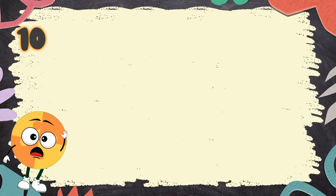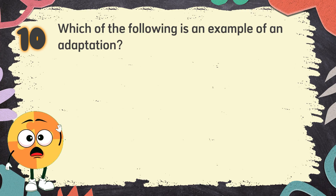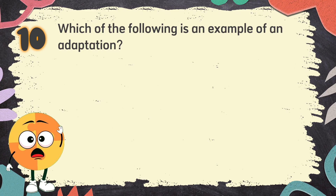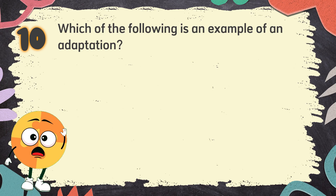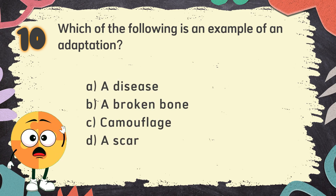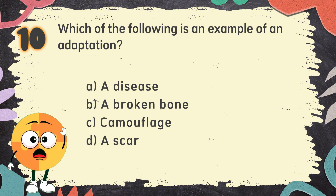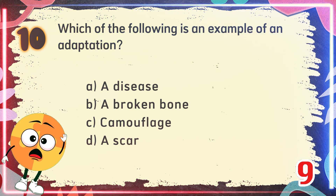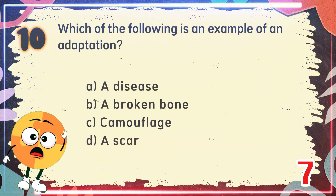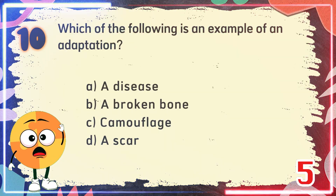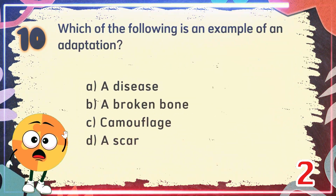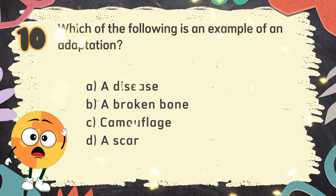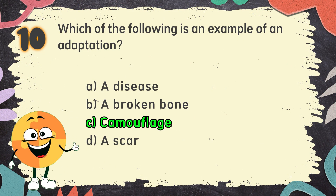Number 10. Which of the following is an example of an adaptation? The choices are A. A disease, B. A broken bone, C. Camouflage, D. A scar. The correct answer is C. Camouflage.